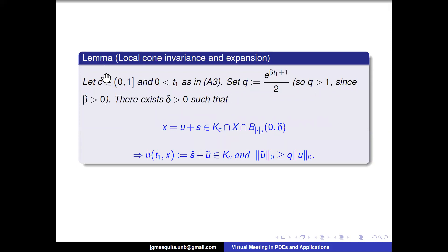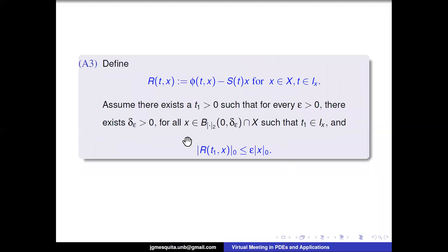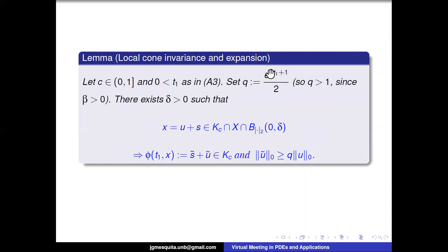We take c in this interval and T1 greater than zero as in hypothesis H3. If we define Q in this way, Q is greater than one by definition. Then there exists delta such that if we start in the cone intersected with the ball, the T1 map will remain in the cone — so the cone is invariant. Moreover, the unstable part is expanding since Q is greater than one.